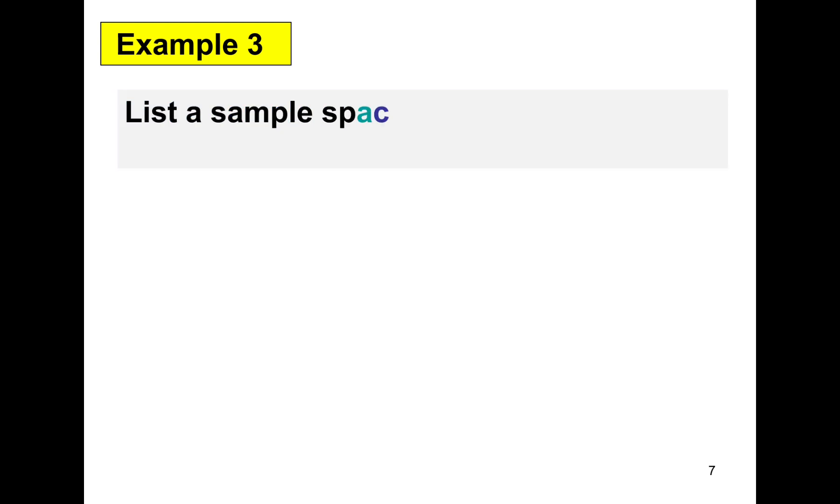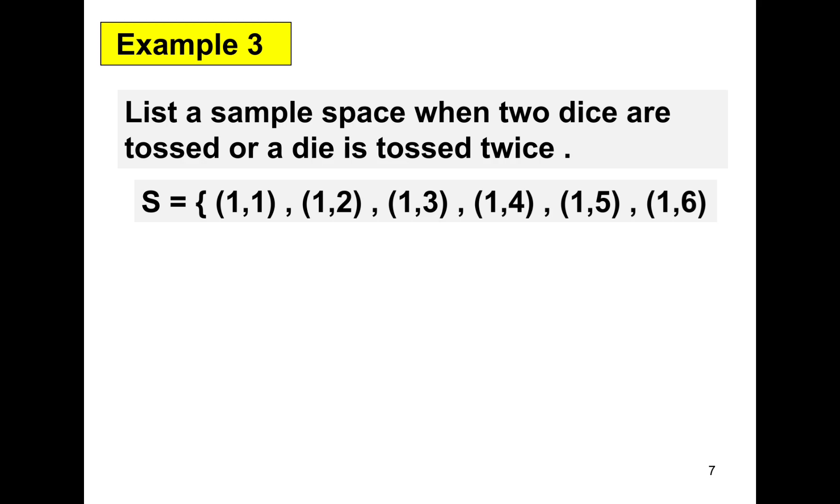For our next example, example number 3, list a sample space when two dice are tossed, or a die is tossed twice. So the sample space are as follows. Do remember that the number here, number 1 here, represents the number that is shown on the first die. And for this one, it's the number that represents or is shown on the top of the second die.